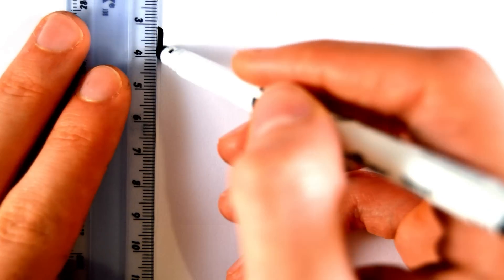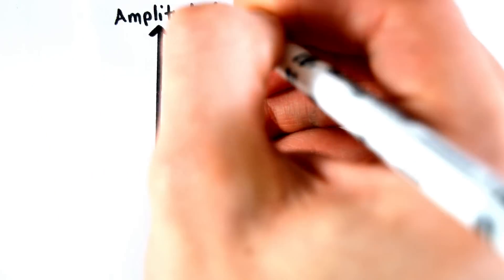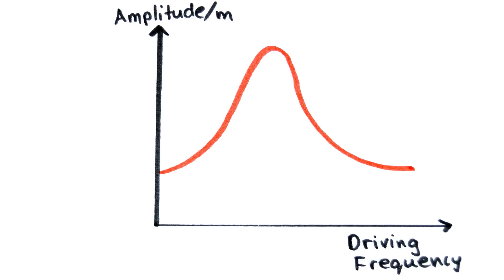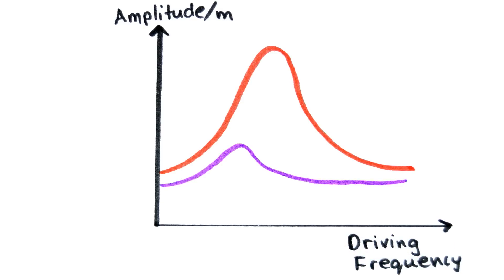If we were to sketch a graph of the amplitude against the driving frequency, it would look like this. Damping also has an effect on resonance, and the graph of a damped system would look more like this. The resonance frequency has decreased as shown by the peak being more towards the left on the graph.